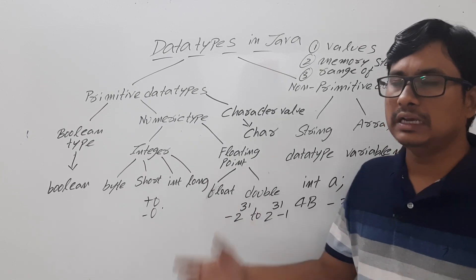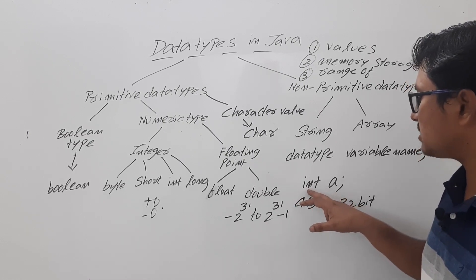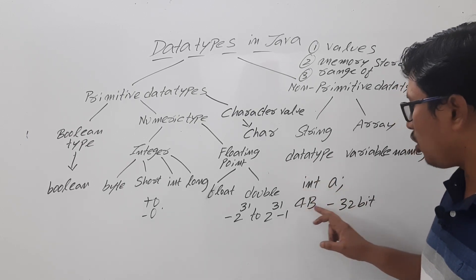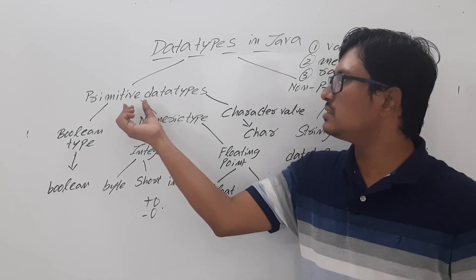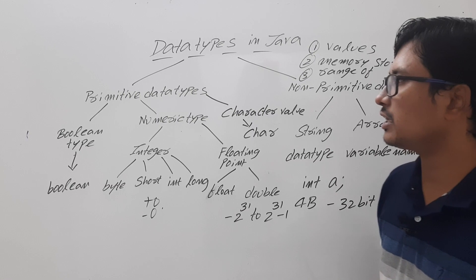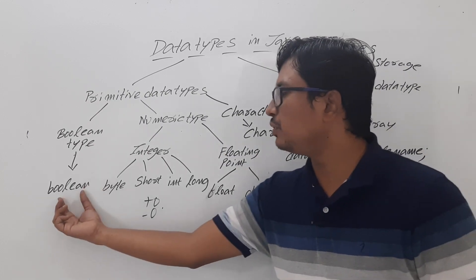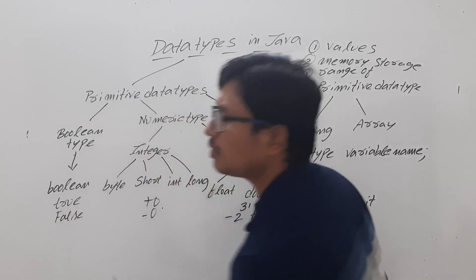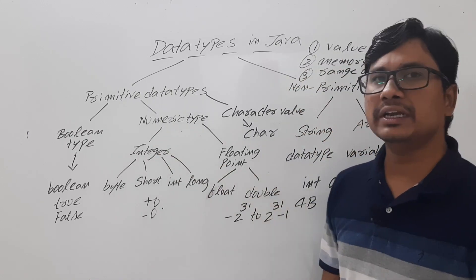So in memory, any negative number is stored in two's complement form. Now, data types are classified into two types: primitive data types and non-primitive data types. Primitive data types are broadly classified into boolean type — boolean can hold the value true or false, it is a one-bit information — and numeric type.